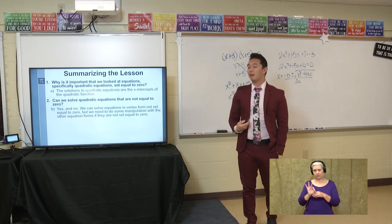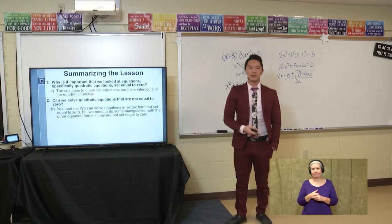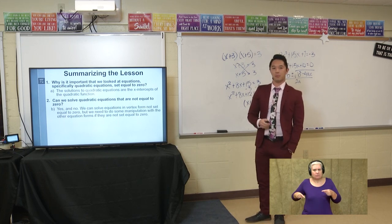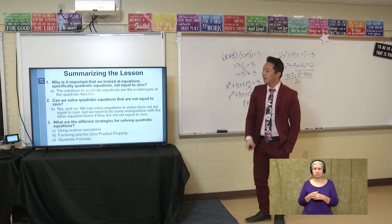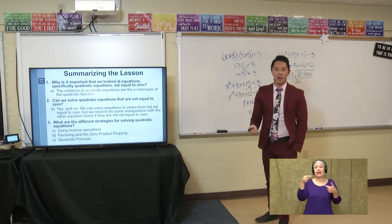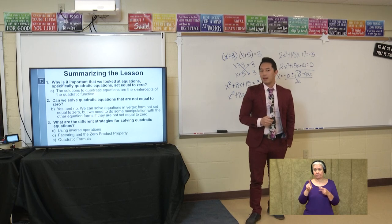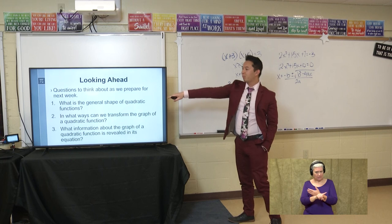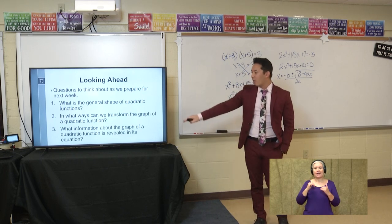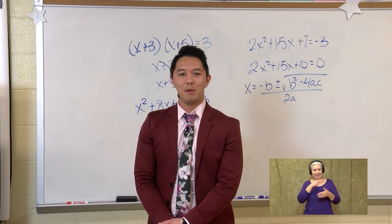Summarizing what we talked about today: why is it important we looked at equations set equal to zero? Because the solutions give us the x-intercepts of our quadratic function. Can we solve quadratic equations not equal to zero? Yes and no — in vertex form we can solve directly, but for other forms we need manipulation to convert them. Once in the right form, we use inverse operations, factoring with the zero product property, or the quadratic formula. Looking ahead to next week, think about the general shape of quadratic functions, ways we can transform their graphs, and what information about the graph can be revealed in its equation. I will see you all next Tuesday.